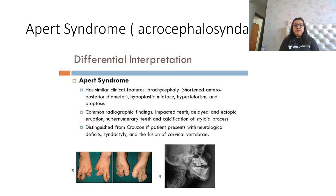Next is Apert syndrome, a variant related to Crouzon syndrome, also called acrocephalosyndactyly. You can see in the images a significant level of syndactyly. They have similar clinical features to Crouzon syndrome except for the presence of limb abnormalities.